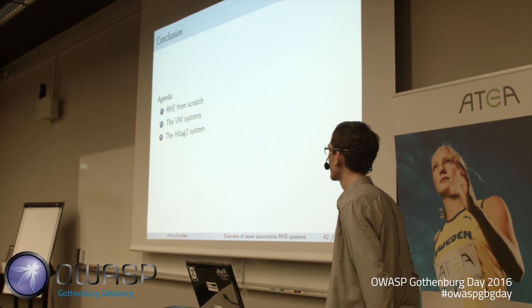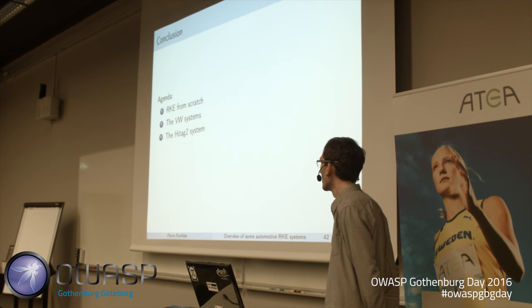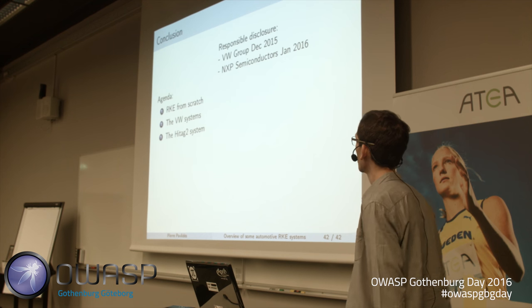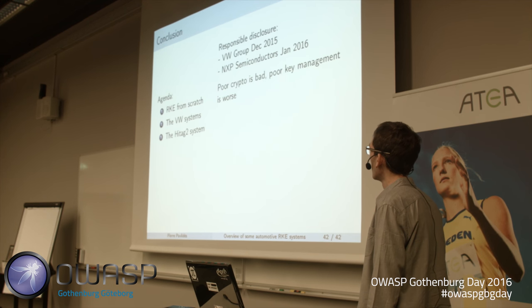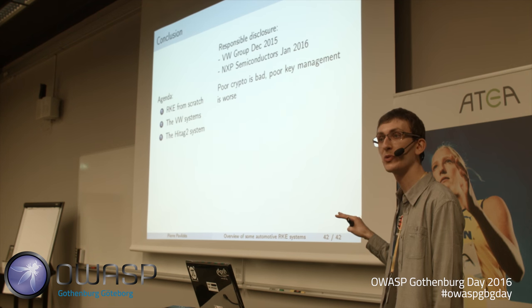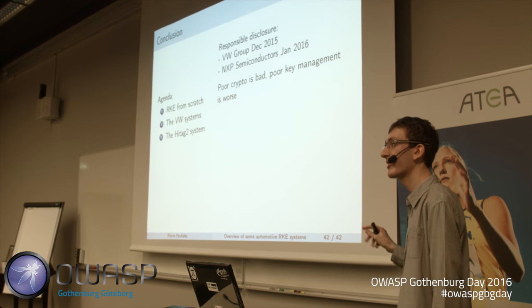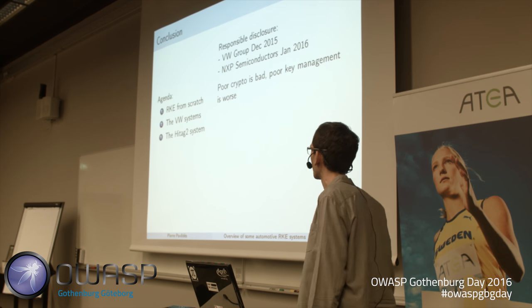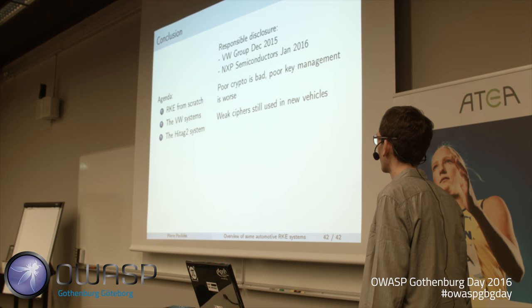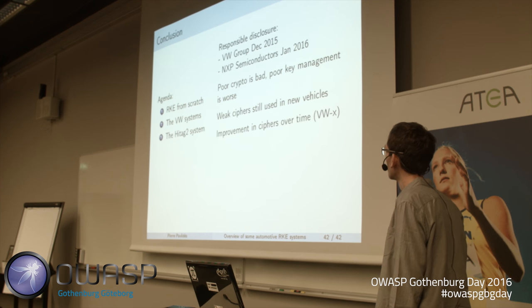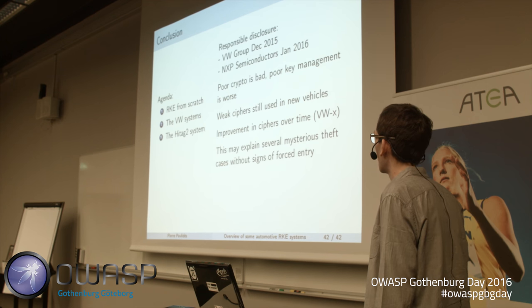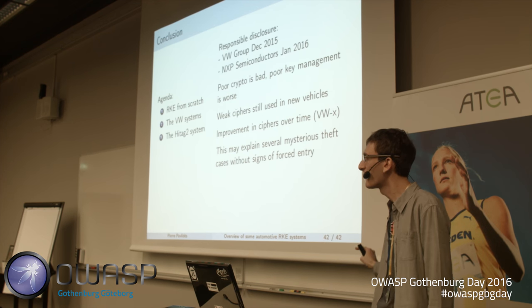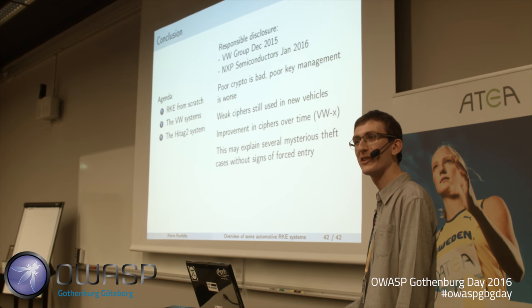To conclude: we've seen what an RKE system is, how to build one from scratch, and what flaws exist in the Volkswagen group and HiTag2 systems. We did responsible disclosure at the beginning of the year. Poor crypto is bad — HiTag2 cipher is known to be broken — but poor key management is worse: even the best cipher fails if you use one key for every car. HiTag2 is still used in new vehicles, and these vulnerabilities may explain real-world car thefts with no signs of forced entry.